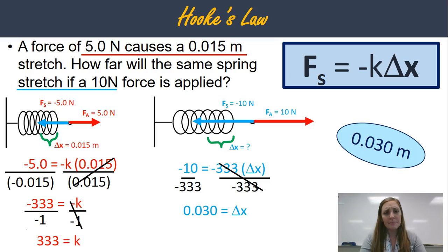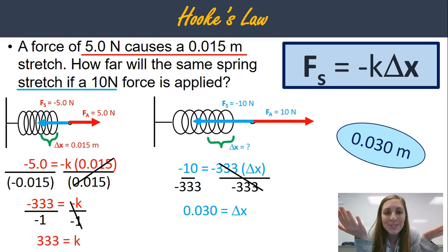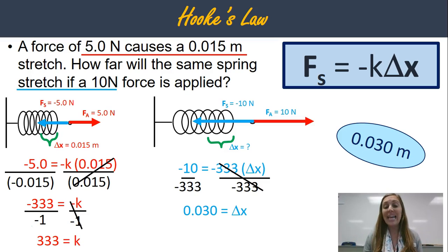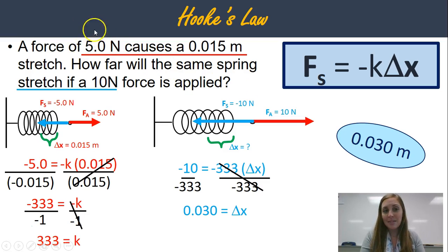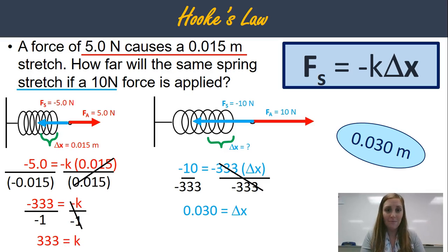Notice: 5 newtons to 10 newtons — you doubled your force. What happened to the stretch distance? It went from 0.015 meters to 0.030 meters — it doubled! Because as I said earlier, they're proportional. So for example, if I had taken the same spring and applied a 15 newton force — that's three times the original force — then my stretch would have been three times 0.015, which is 0.045 meters.